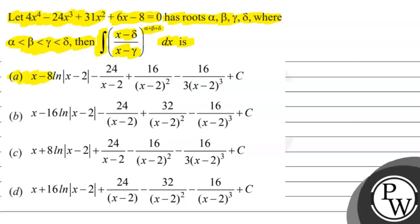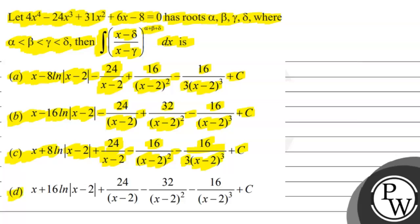Option A: x minus a times natural log of mod(x minus 2) minus 24 divided by (x minus 2) plus 16 divided by square of (x minus 2) minus 16 divided by 3 times cube of (x minus 2) plus C. Option B: x minus 16 times natural log of mod(x minus 2) minus 24 divided by (x minus 2) plus 32 divided by square of (x minus 2) minus 16 divided by cube of (x minus 2) plus C. Option C: x plus a times natural log of mod(x minus 2) plus 24 divided by (x minus 2) minus 16 divided by square of (x minus 2) minus 16 divided by 3 times cube of (x minus 2) plus C. Option D: x plus 16 times log of mod(x minus 2) plus 24 divided by (x minus 2) minus 32 divided by square of (x minus 2) minus 16 divided by cube of (x minus 2) plus C.